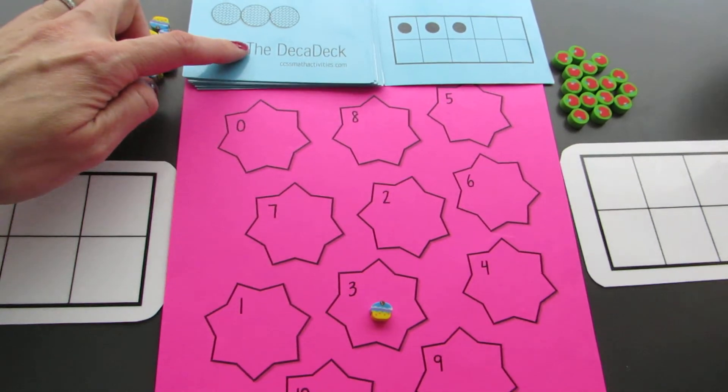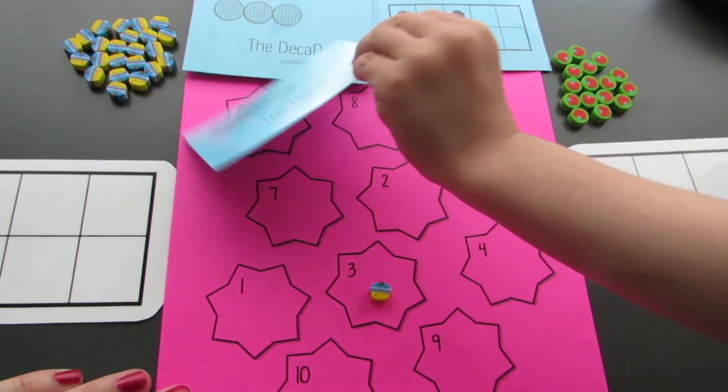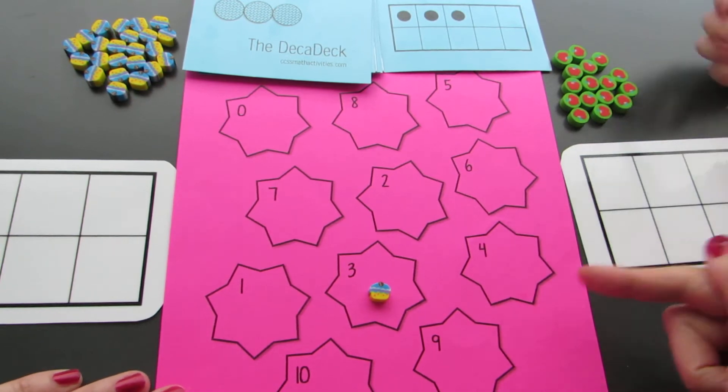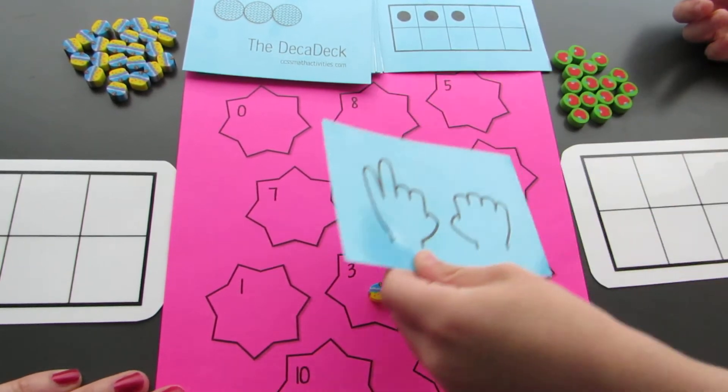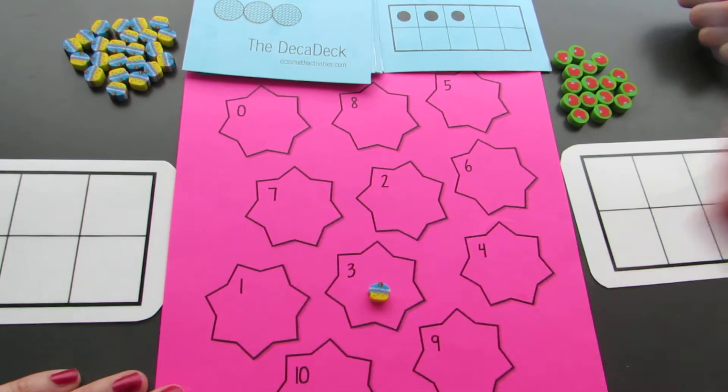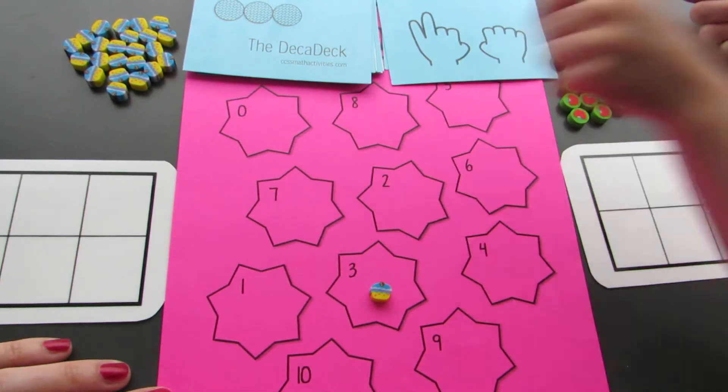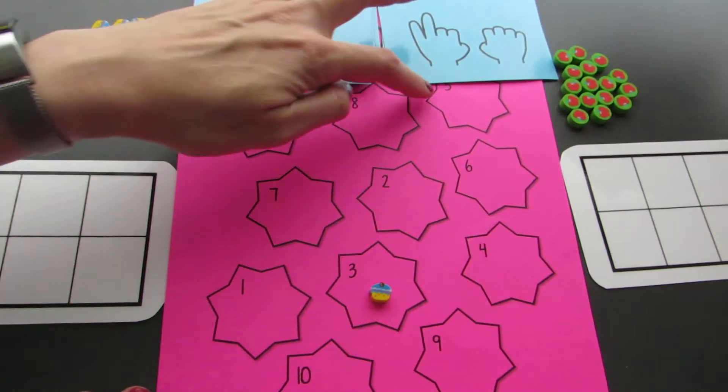Will you draw a card here please? Put it right here. How many is that? Two. Two. Okay. Match that number. Where is the two? Two.